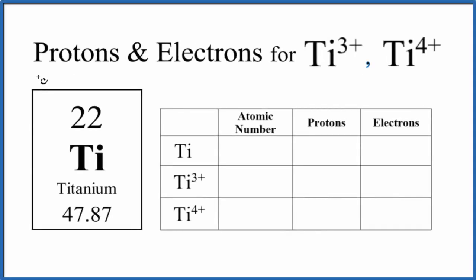In this video, we'll find the number of protons and electrons for Ti3+ and Ti4+. This is the titanium 3-ion, this is the titanium 4-ion. We'll also look at neutral titanium.